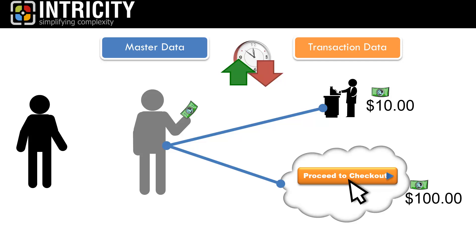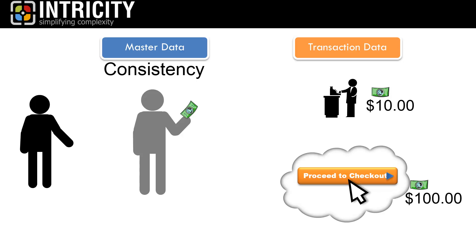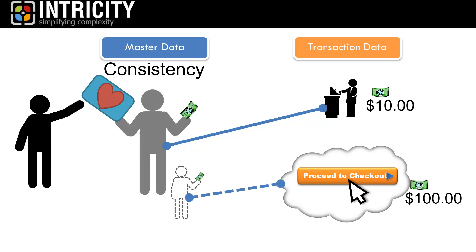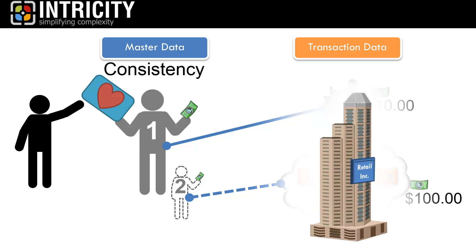How we manage master data versus transaction data is important, as they both have very unique challenges. Master data is challenged by consistency issues. For example, you may use your customer loyalty card when you check out at the cash register, but when you buy online, you may not. This creates two customer profiles, even though it's really the same person. This also makes it difficult for retailers to evaluate you as a customer, and it inflates the number of customers the retailer thinks it has.